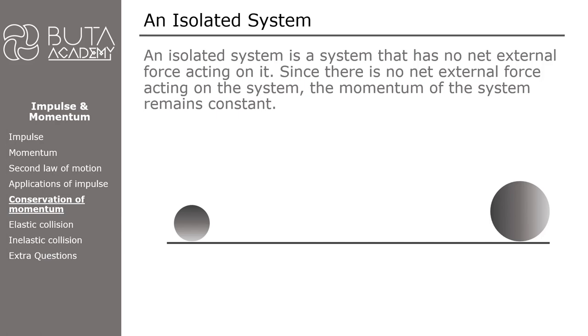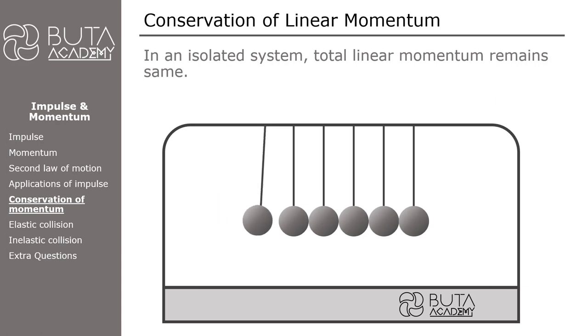But again, for simplicity, we are ignoring all of them and assume that the system is isolated. The question may arise, why we have focused on an isolated system so much? The reason is the law of conservation of linear momentum. According to this law, in an isolated system, total linear momentum remains same.